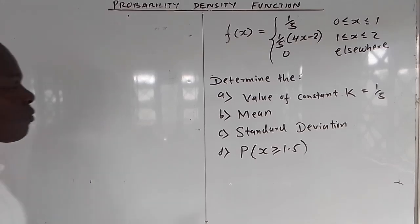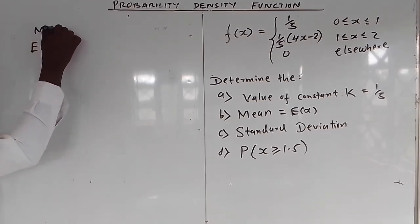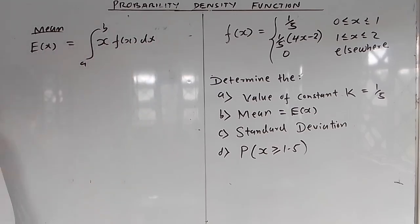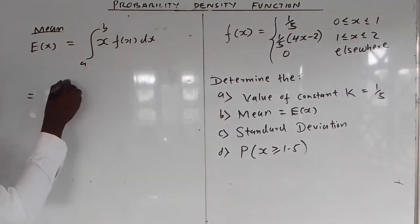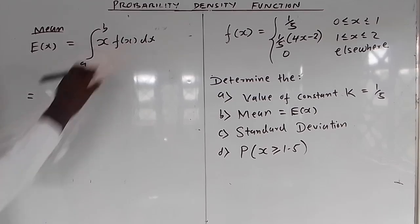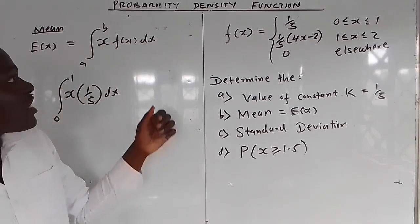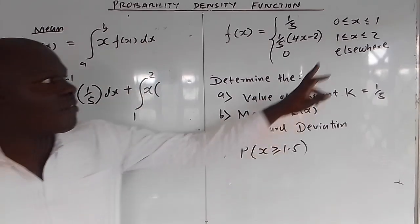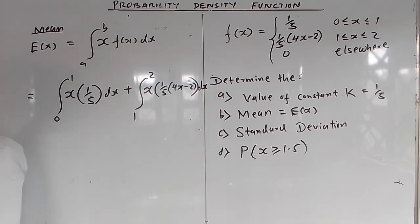The mean is the expected value of x. E[X] is given by integrating x·f(x) dx between the limits. Since the function has different definitions over different intervals, you separate it into two parts: from 0 to 1, x·f(x) = x·(1/5) dx, and from 1 to 2, x·f(x) = x·(1/5)(4x − 2) dx. Factor out 1/5 as a constant from each integral.